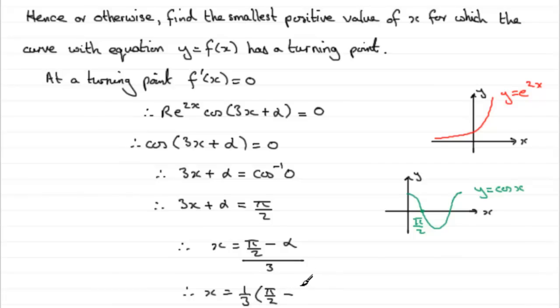And alpha we had as 0.98279 and so on, radians. Now to work something like this out, you don't have to be in radians mode. It doesn't matter. But anyway, if you work that out, what you should find that you get is 0.19600 and so on. And if we give this to three significant figures, then x is going to equal 0.196 to 3sf.